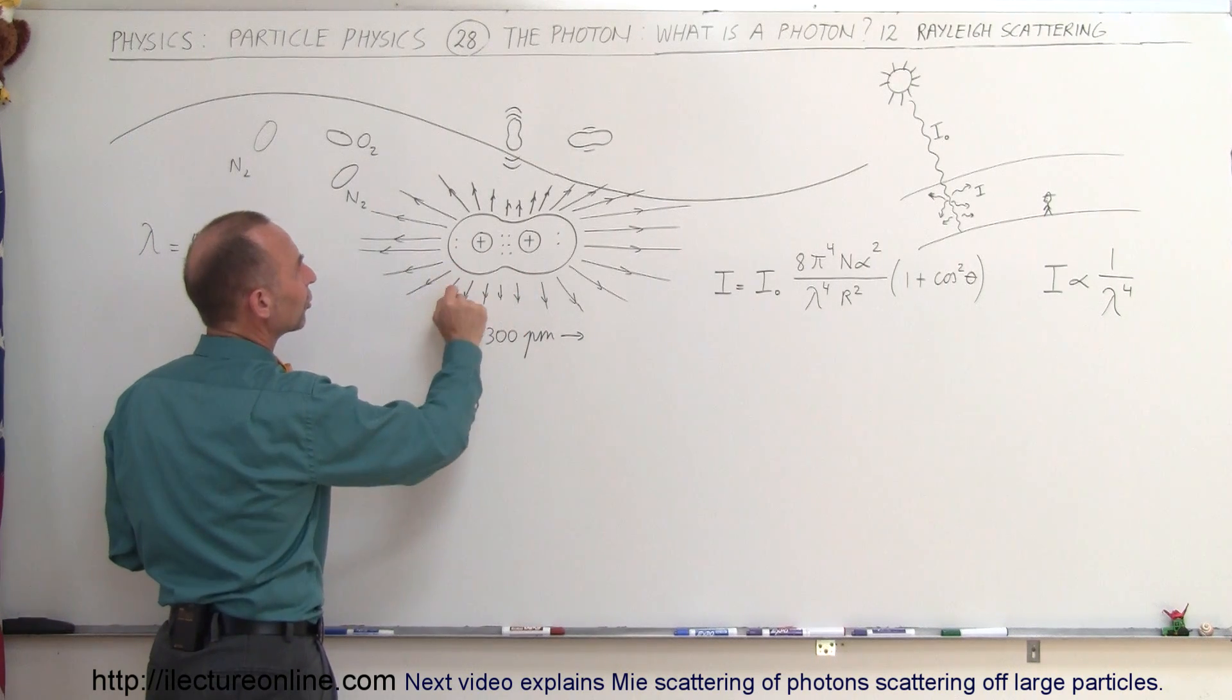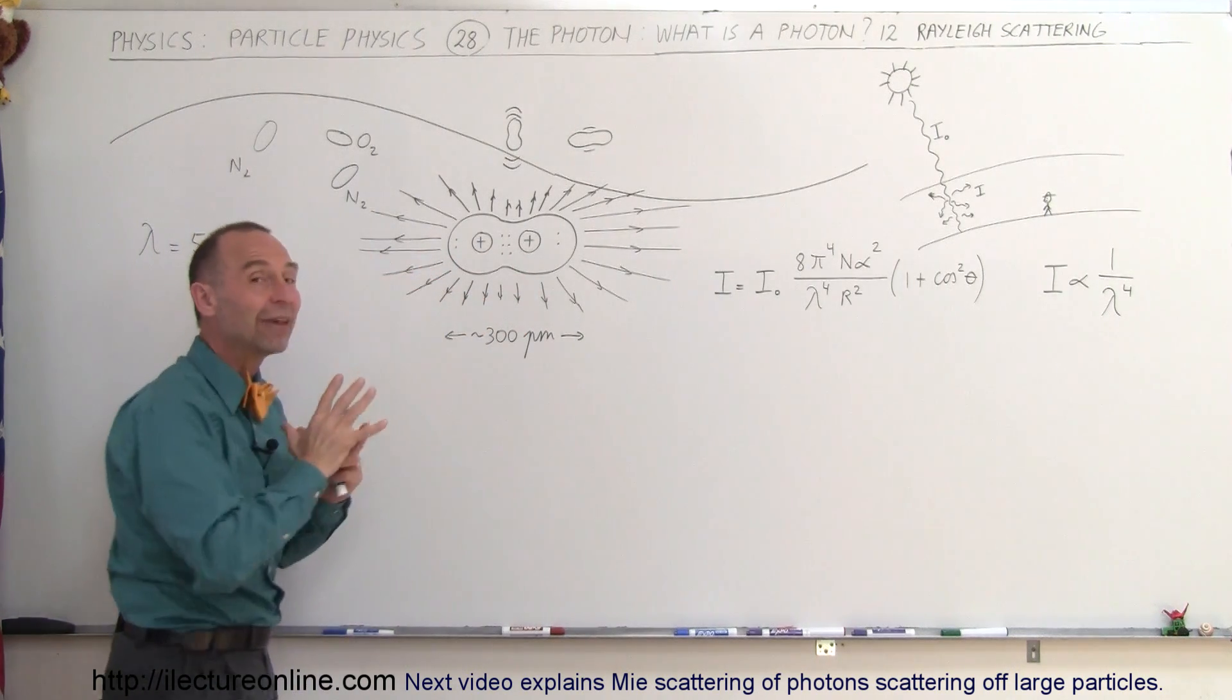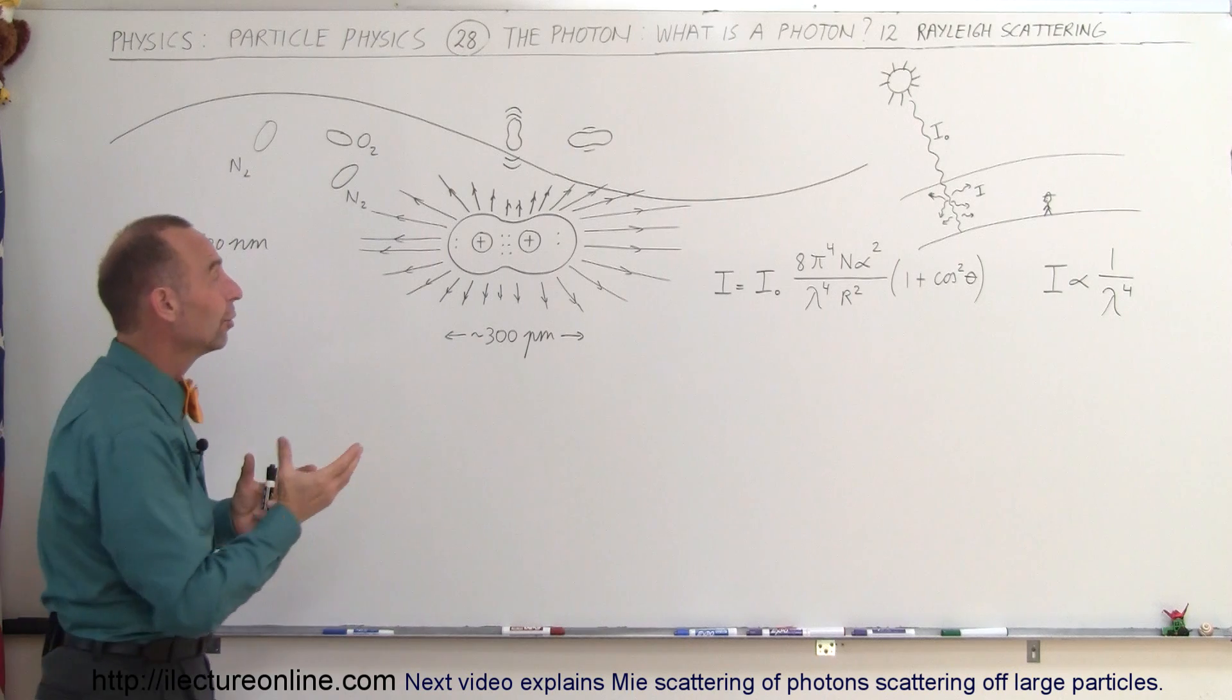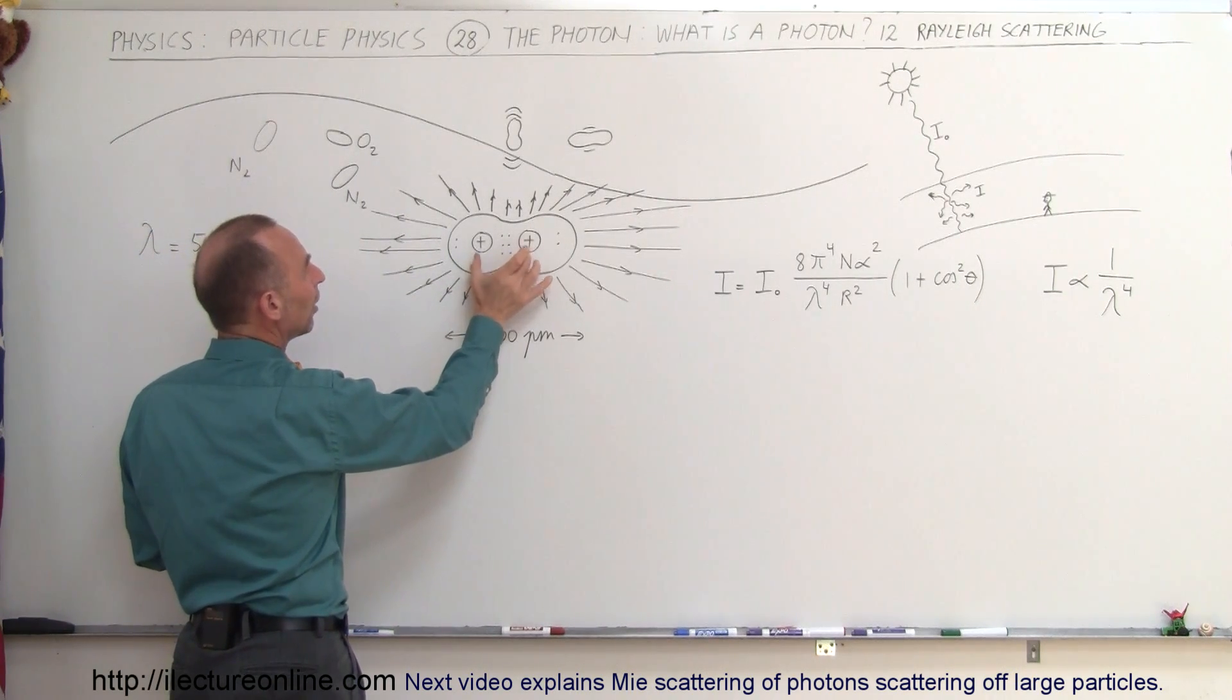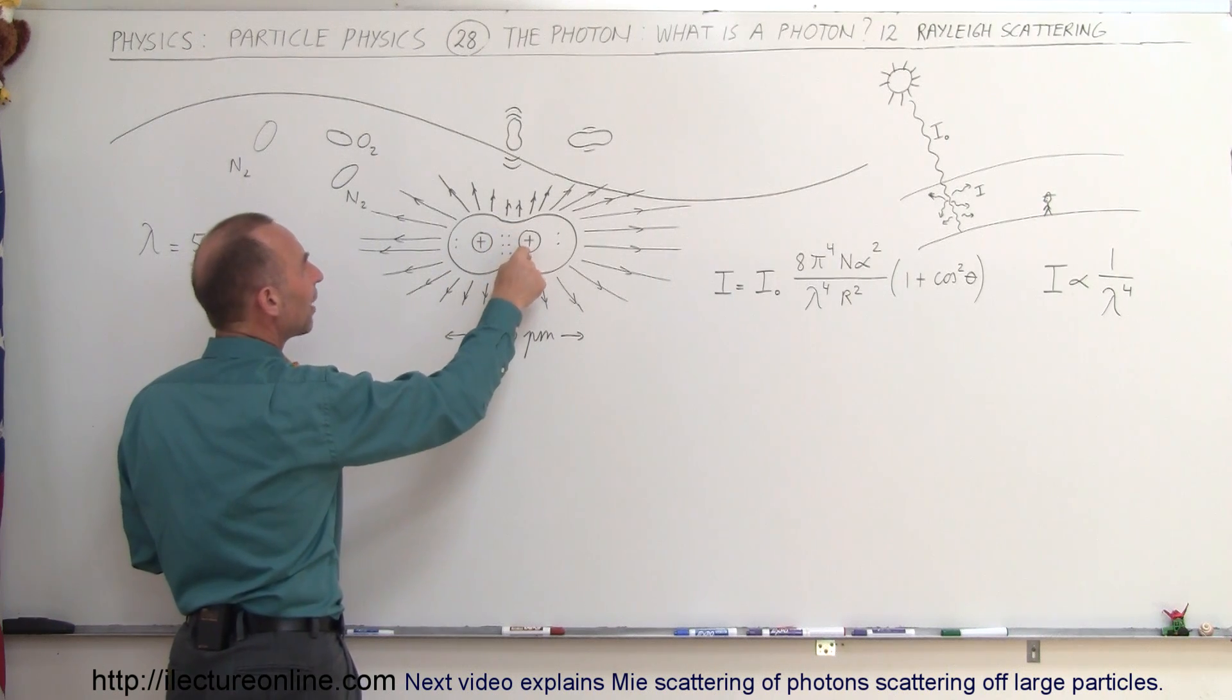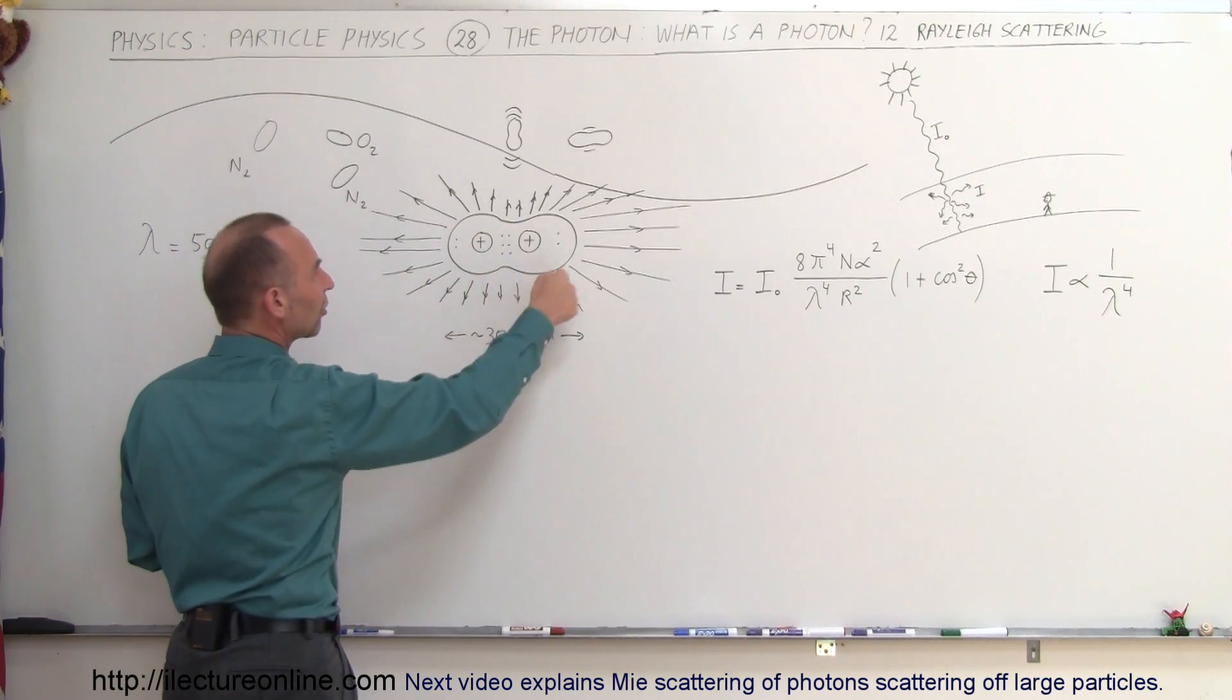Here's a nitrogen molecule. Nitrogen has five valence electrons in the outer orbital, in the outer energy level I should say. And so we have two nuclei that are positively charged and 10 electrons in total.